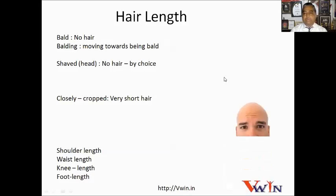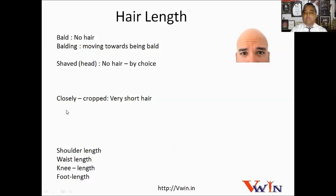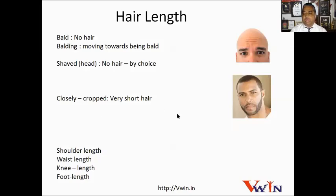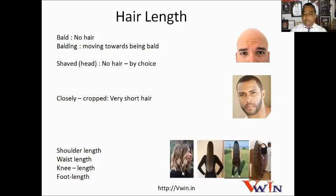Bald — we all know who is bald. If someone is balding, it means the person is losing hair rapidly and moving towards being bald. A shaved head looks similar but the person has shaved by choice, whereas in the first two cases there is no choice. Closely cropped means very short hair — almost looking bald but with very short hair. Then we have shoulder length, waist length, knee length, and foot length hair.